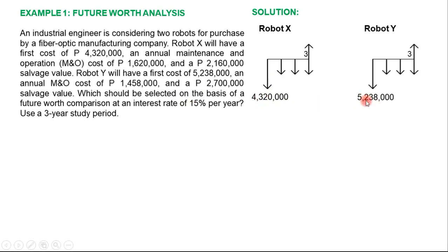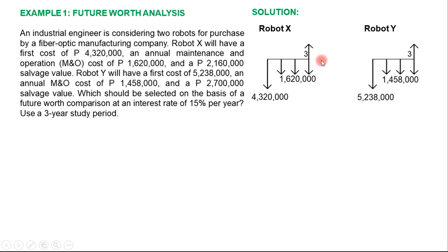Robot Y has an initial cost of 5,238,000. The maintenance and operating cost for Robot X is 1,620,000 per year for three years, and 1,458,000 per year for Robot Y. At the end of their service life, Robot X will have a salvage value of 2,160,000 and Robot Y will have a salvage value of 2,700,000.